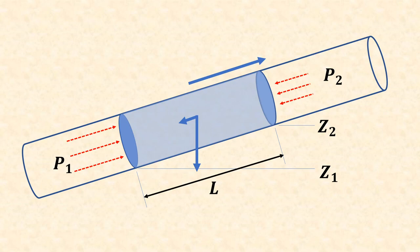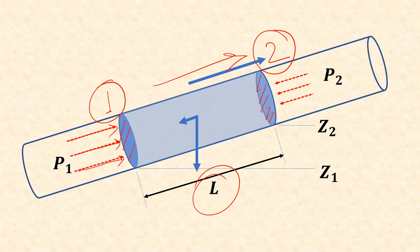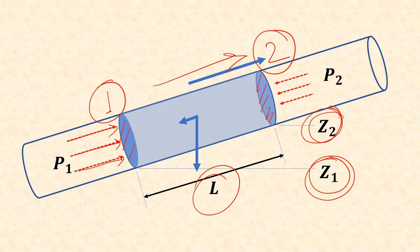Now let's derive this equation. We take a pipe segment and imagine two cross-sections, one and two. The flow direction is given by an arrow. At upstream cross-section one the pressure is p1, and at downstream cross-section two the pressure is p2. The length between the two cross-sections is l, and the height difference is z2 and z1. We consider the general condition of an inclined pipe rather than just a horizontal pipe.